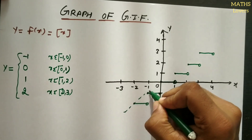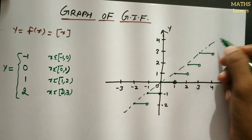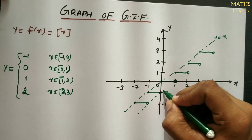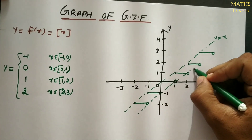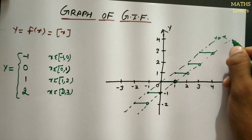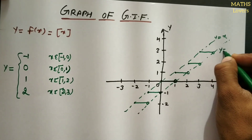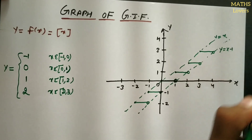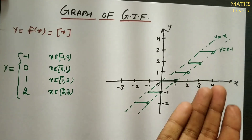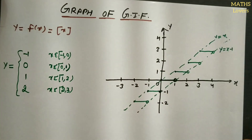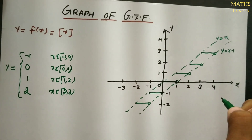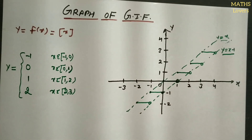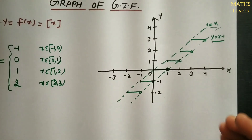We can observe that the graph of GIF is sandwiched between two lines: y = x and y = x minus 1. This is just for information — the step graph always lies between these two straight lines. This is how we draw the graph of the greatest integer function.